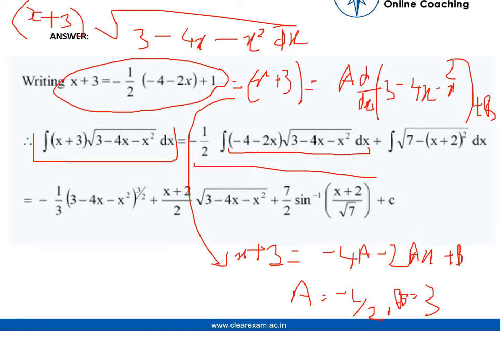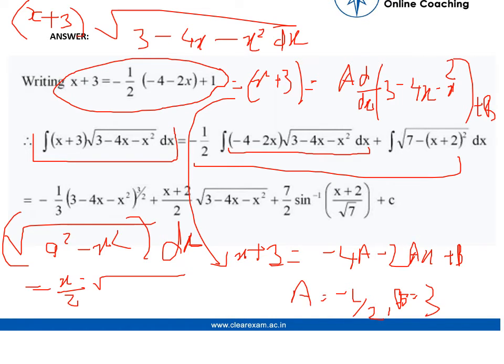Here, we use a formula, which is under root of a square minus x square of dx is equals to x by 2 into the original term. So, this value remains the same because we substituted its value in the above equation as t. So, when we integrate it, we get this value.